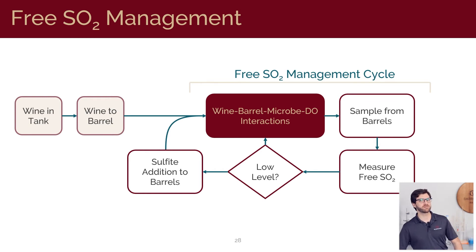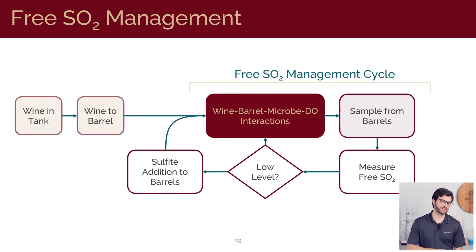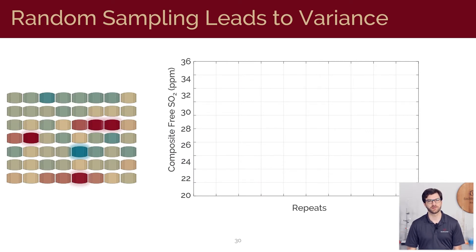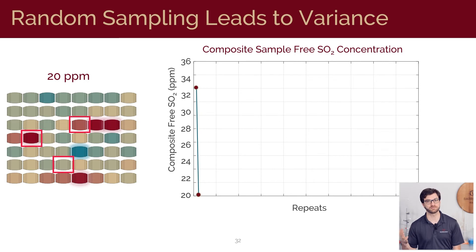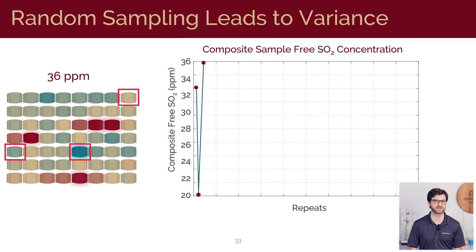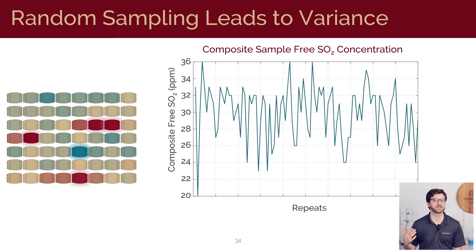So first we'll look at how sampling methods can impact decision making in this cycle. Let's revisit our 56 barrel group and look at the information we would receive as a winemaker managing this group. We might ask for a composite sample of three barrels and get a value of 32 parts per million, or our cellar team might sample three barrels and we're given a value of 20 parts per million or 36 parts per million. If we repeat this experiment a hundred times, look at the difference in information that we would be receiving.